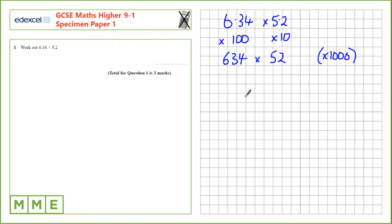For 634 times 52 we can multiply using the grid method. So 600, 30 and 4, and 52 can be split up into 50 and 2.